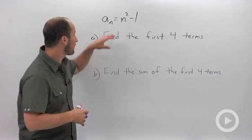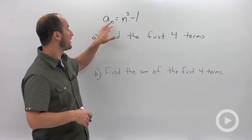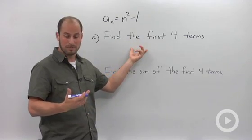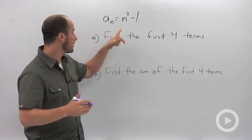I have a general term for a sequence: a_n = n² - 1. First we're asked to find the first four terms. In order to find the first term we would find a_1.